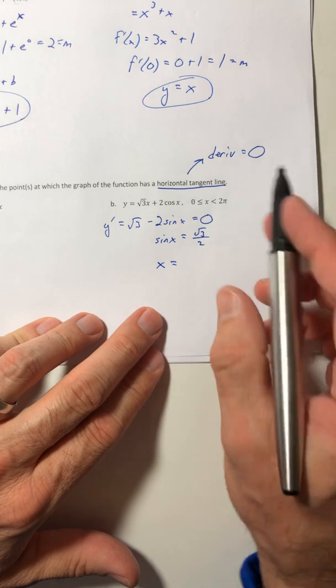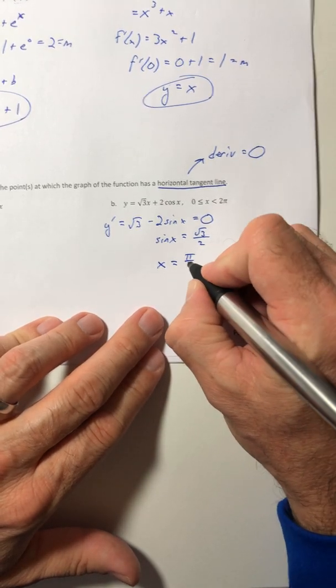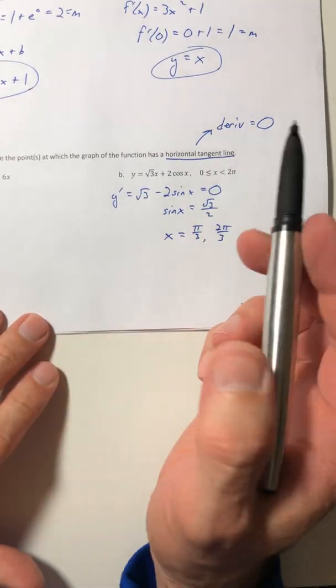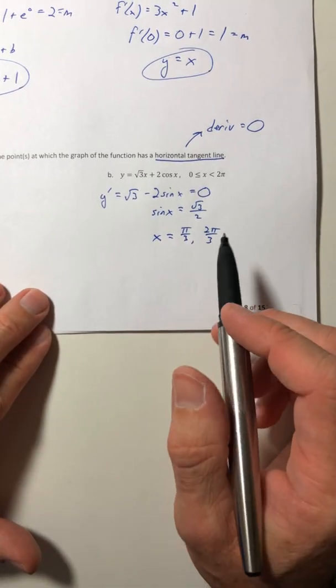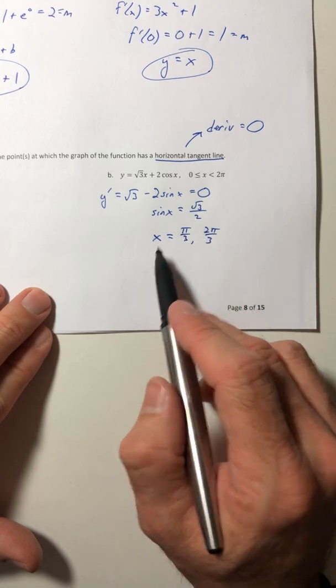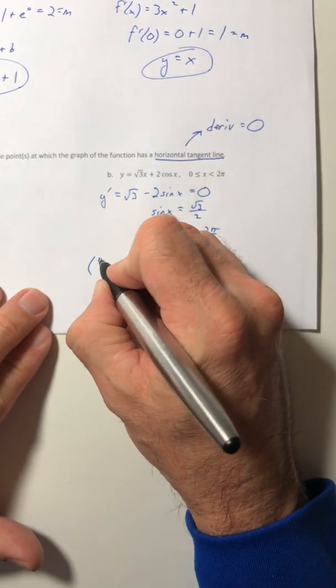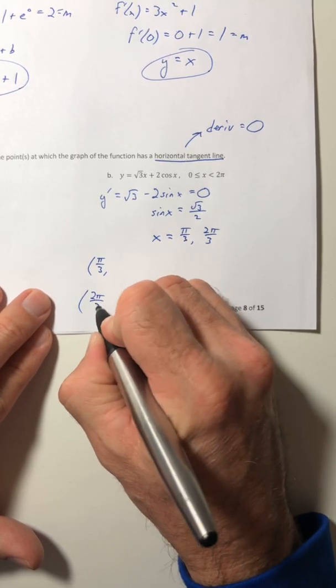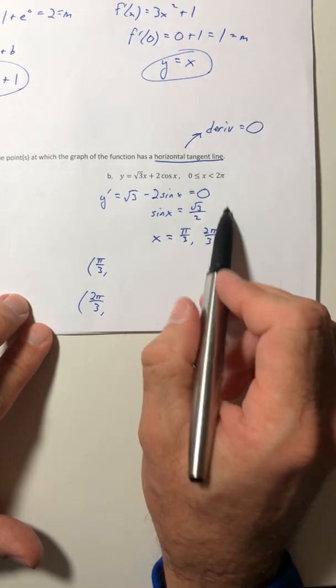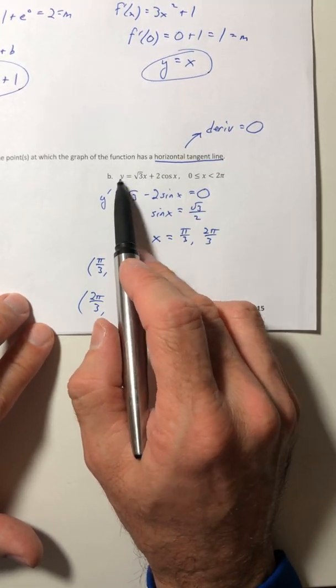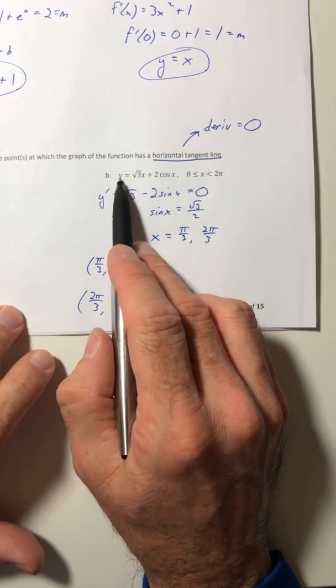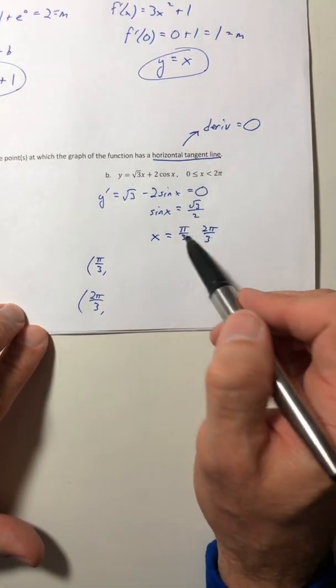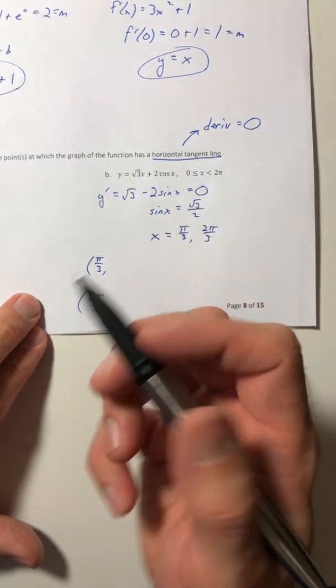And then using your trig skills, where does sine equal root 3 over 2 in between 0 and 2 pi? Well that would be pi over 3 and 2 pi over 3. So it says determine the points, not determine just the x value. So if it wants the points, you got to also give the y coordinate. So we're going to take the pi over 3 and the 2 pi over 3, and we're going to take those and plug it back into the original function. Anytime you want the y coordinate, you got to go back to the original function. Don't go to the derivative, that's just going to give you zero every time because that's what you just solved.